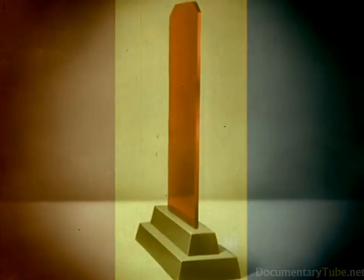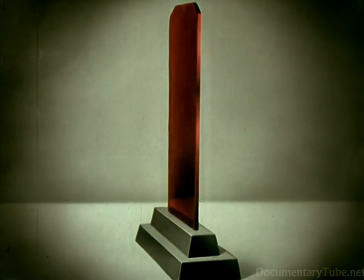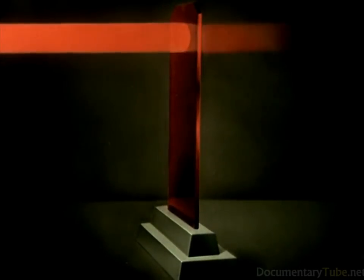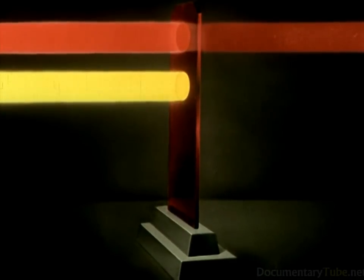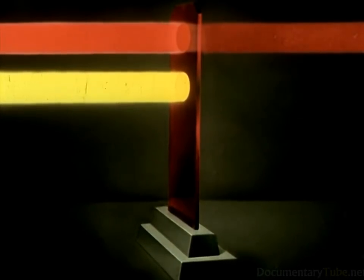Each of the three colors is first extracted from the picture through its proper color filter. Any piece of transparent colored glass is a filter, letting through light of its own color. If some other light strikes the filter, it cannot get through.